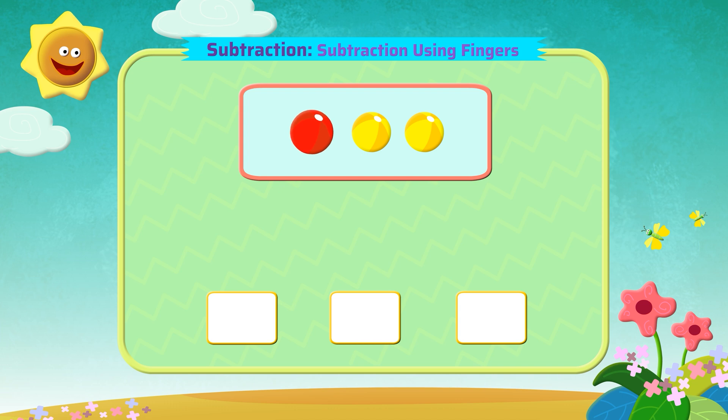So let's use our fingers to subtract. There are three balls, so we have three fingers. One ball is removed, so we put one finger down. So the answer is there are two balls left. You are on your way!